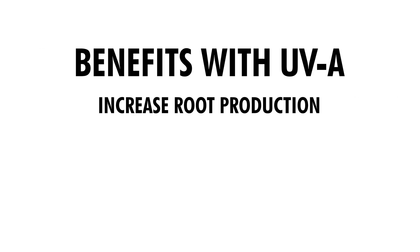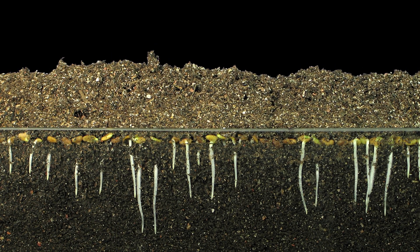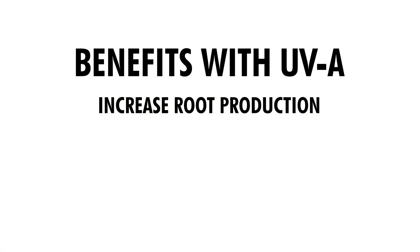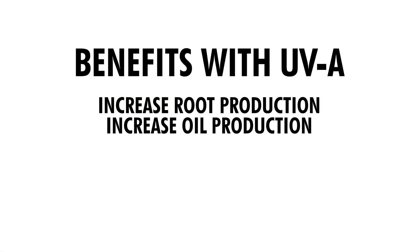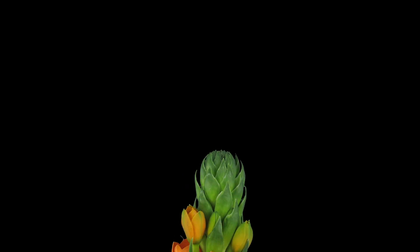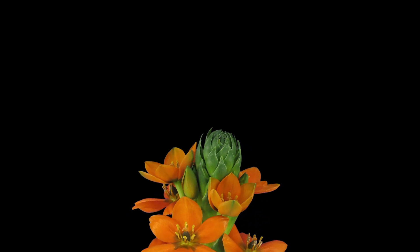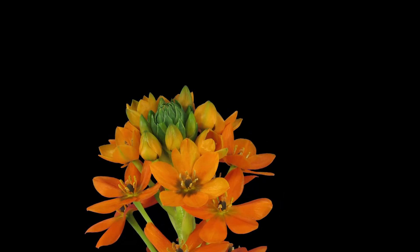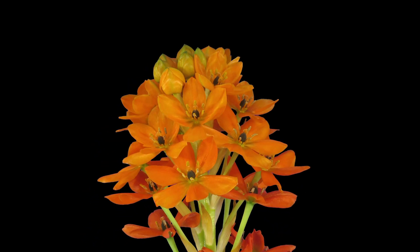The benefits of UVA include increased root production — your roots grow more productively, giving the plant the ability to feed more efficiently. Second, you'll have increased essential oil production, and flavors and aromas will increase in the overall plant. Lastly, you'll see less stretching and more branching, making plants wider and bushier. As the plant recognizes UVA, it stops trying to push through the canopy because it doesn't need to grow further to absorb more light.